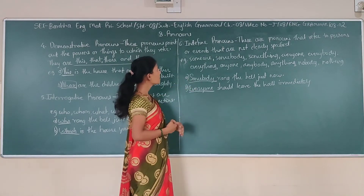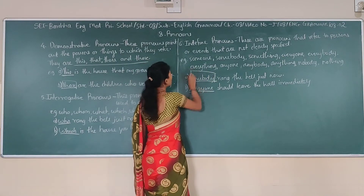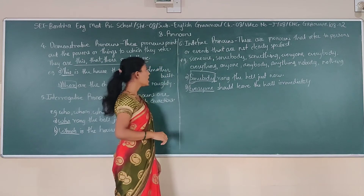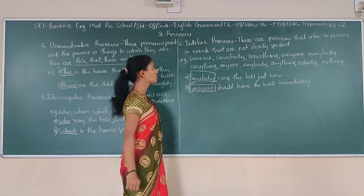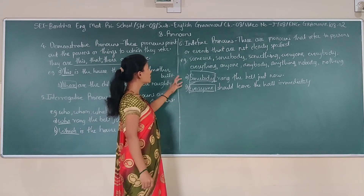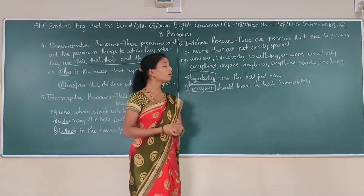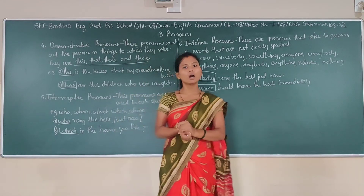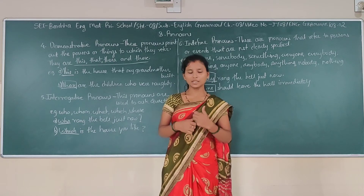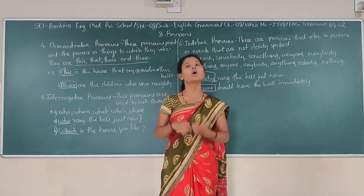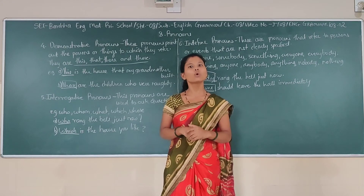First example: 'Somebody ran with Joshna.' Here the indefinite pronoun is 'somebody.' Second example: 'Everyone should leave the hall immediately.' So 'everyone' is an indefinite pronoun. These were the last three types of pronouns from our lecture. Do practice at your home — find out more examples of the same kinds of pronouns so it will be easily understood.